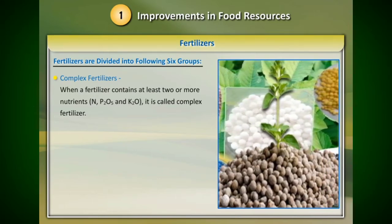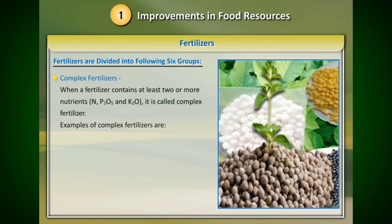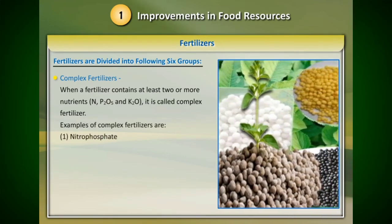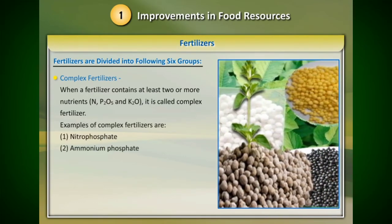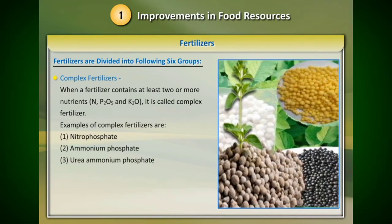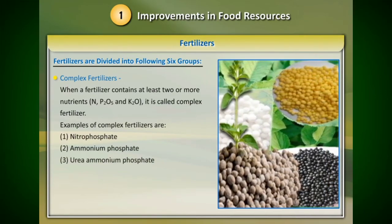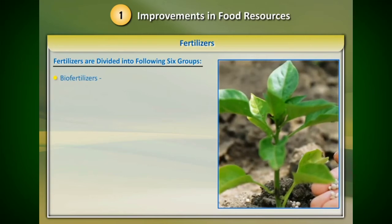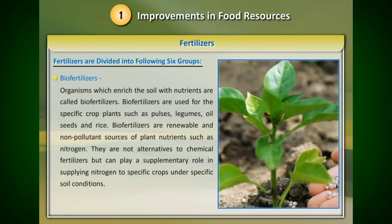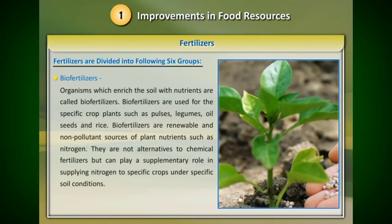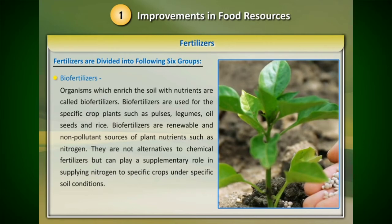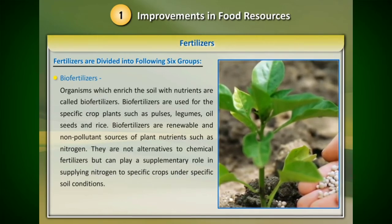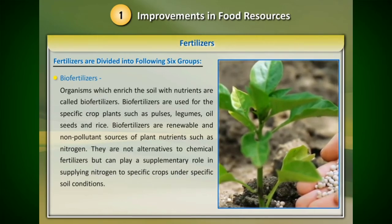Examples of complex fertilizers are: 1) nitro phosphate, 2) ammonium phosphate, and 3) urea ammonium phosphate. Five: bio fertilizers. Organisms which enrich the soil with nutrients are called bio fertilizers. Bio fertilizers are used for specific crops.